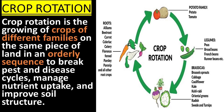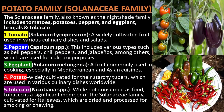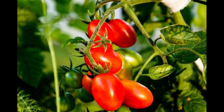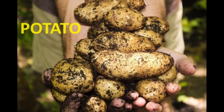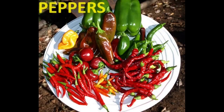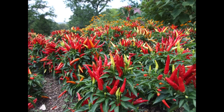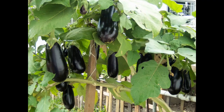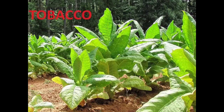Crop families include the potato family, or Solanaceae family. Common members include tomatoes, potatoes, peppers, eggplant, and tobacco.